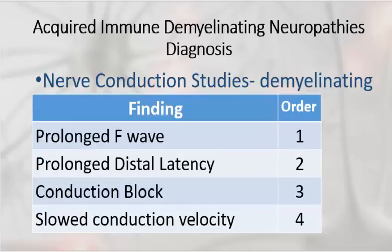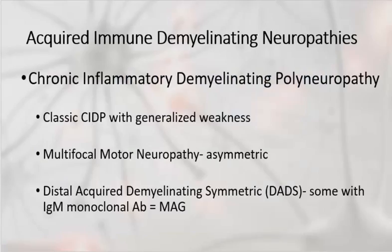The absence of an abnormal nerve conduction study does not exclude Guillain-Barré, particularly early in the course of the disease, so it behooves one to treat and then repeat the study later on. Here is the list of chronic acquired immune demyelinating neuropathies, most notable of which is CIDP — chronic inflammatory demyelinating polyneuropathy — which is essentially a chronic form of Guillain-Barré syndrome with a symmetrical generalized weakness. A variant of that is multifocal motor neuropathy, which shows only motor involvement but is asymmetrical, and it responds to IVIG and not to steroids.